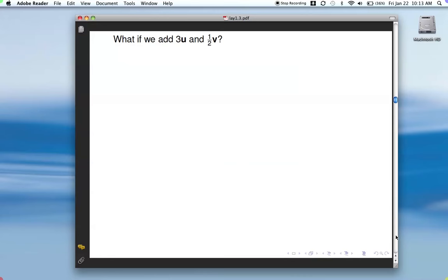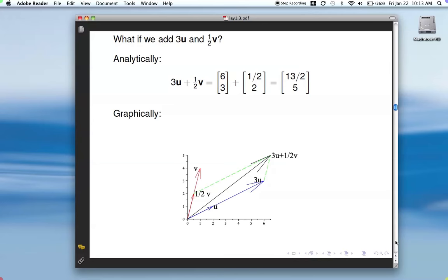We can add those two together. So this is how we do it. 3 times u plus 1 half v. We already know how to do these operations. And graphically, take our 1 half v, align parallel to 3u, and do similarly over here. And the resultant vector here is what we think it should be, about 13 halves, 5.